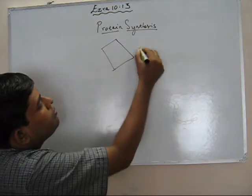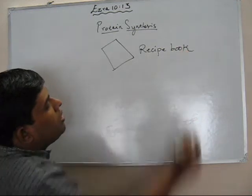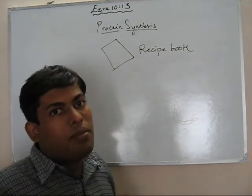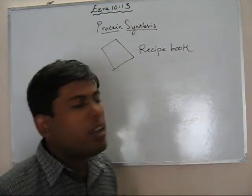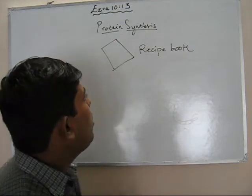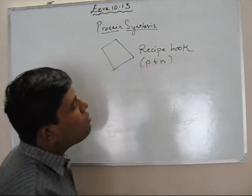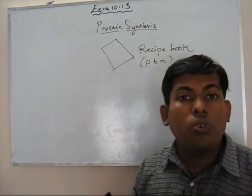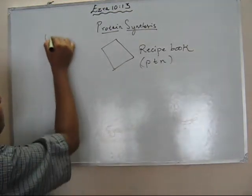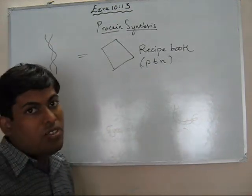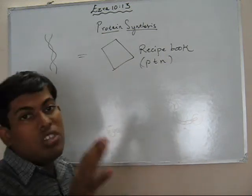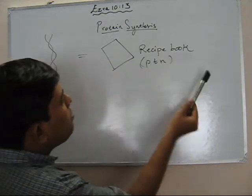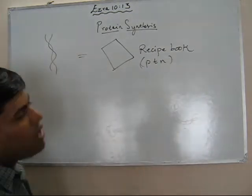Imagine that there is a recipe book. A recipe book would have a list of recipes that can be made by a cook or any person who can understand and follow the instructions present in it. Let us consider that this is a protein recipe book — it would have the instructions of how to make a protein. DNA, the molecule which has the genetic information or the blueprint to make a protein, is compared to this recipe book. This is the first stage of our analogy.